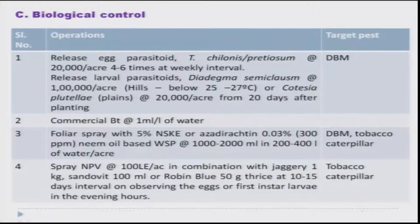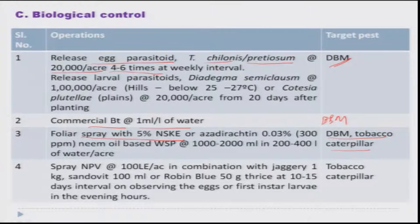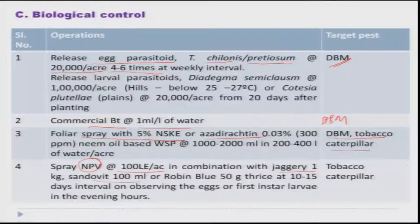Several biocontrol agents have been recommended. Releasing the egg parasitoid Trichogramma chilonis or pretiosum at the rate of 20,000 per acre, 4 to 6 times at weekly intervals, will take care of DBM. Application of commercial Bt at the rate of 1 ml per liter is also very effective against DBM. To manage tobacco caterpillar and DBM, foliar spray with 5% NSKE or commercially available azadirachtin, and NPV against Spodoptera at the rate of 100 ml per acre mixed with jaggery or sandovit as a sticker, is quite effective.